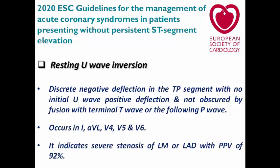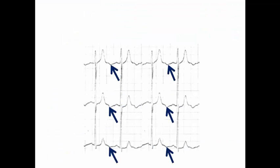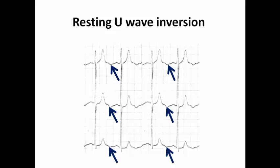We are speaking about the lateral leads, and resting U wave inversion usually indicates severe stenosis of the left circumflex or LAD with a positive predictive value of 92%. Here in this ECG we can see the presence of resting U wave inversion — clearly completely negative U waves, distinct from the T wave and from the P waves — providing clear evidence of resting U wave inversion.